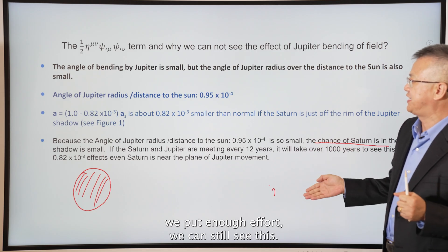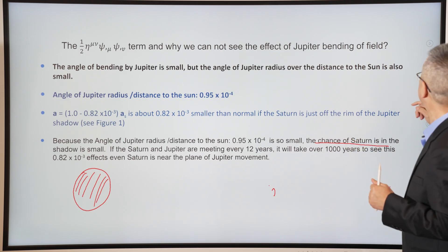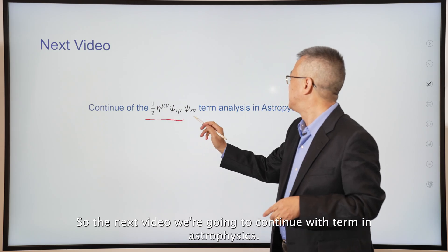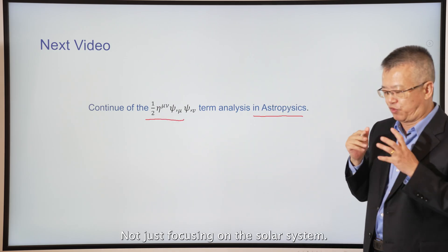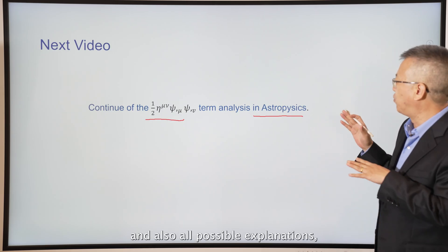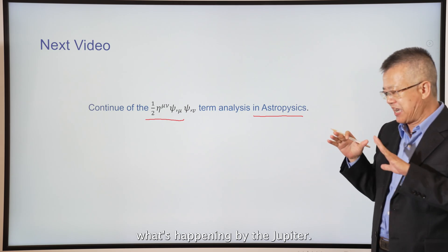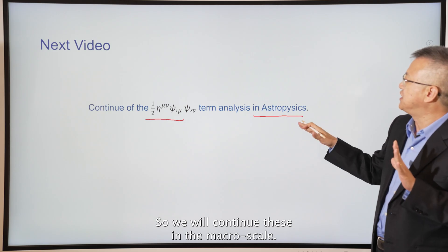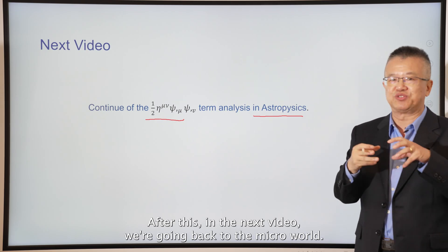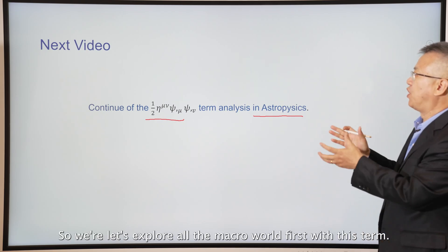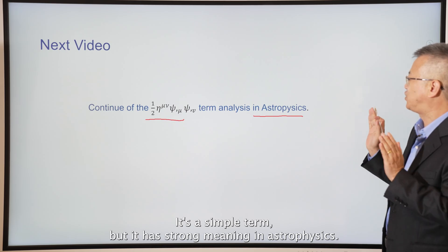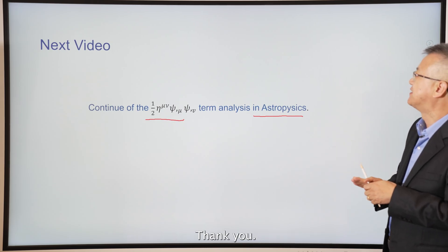The next video will continue examining this term in astrophysics — not just focusing on the solar system but studying all possibilities and explanations for what's happening near Jupiter. After that next video, we'll go back to the micro world. Let's explore all the macro world first. This is a simple term but it has strong meaning in astrophysics. Thank you.